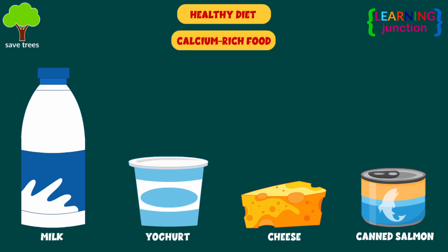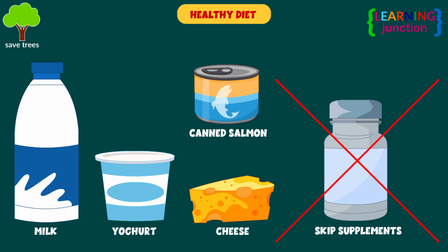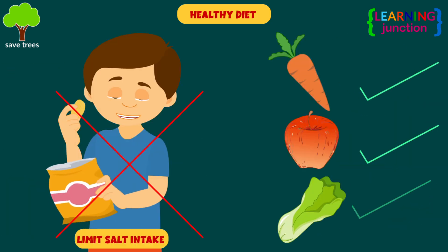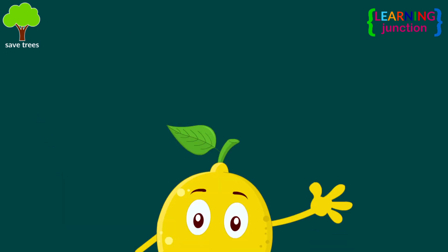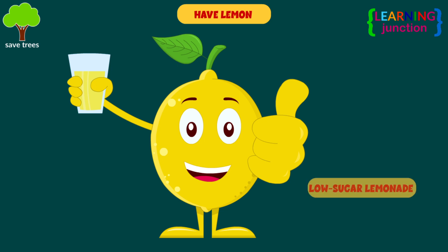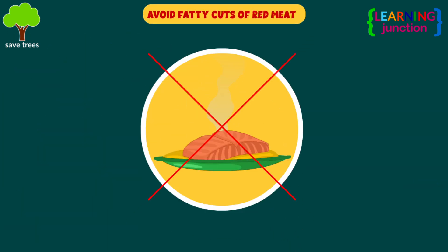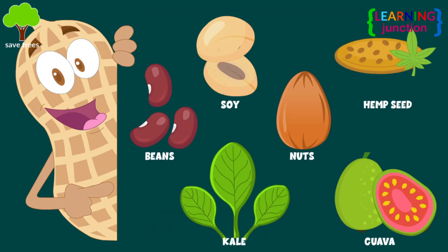Follow a healthy diet. You should include calcium-rich foods in your diet, but skip the supplements. Try to limit the amount of salt you eat and avoid adding extra salt to your food. Squeeze a lemon into your water or have a daily glass of low-sugar lemonade. Avoid fatty cuts of red meat and get as much protein as you can from plant-based organic sources.